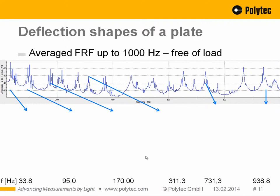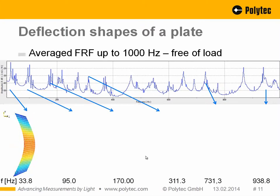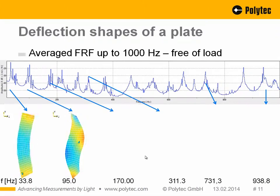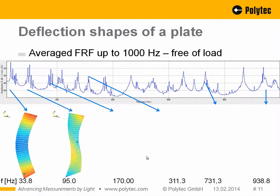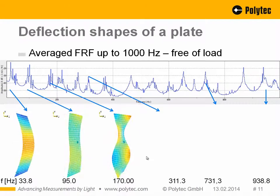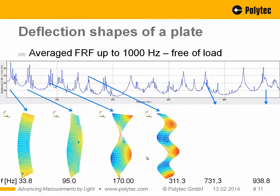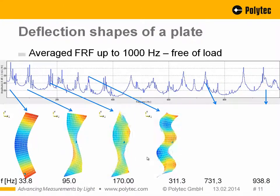First, let's look at some example deflection shapes. There is quite a high modal density on such a plate with a free-free suspension. We start with the first bending mode at 33.8 Hz, followed by a torsional mode at 95 Hz, and so on. Looking at just up to 1 kHz, there are many more modes visible if we look closer.